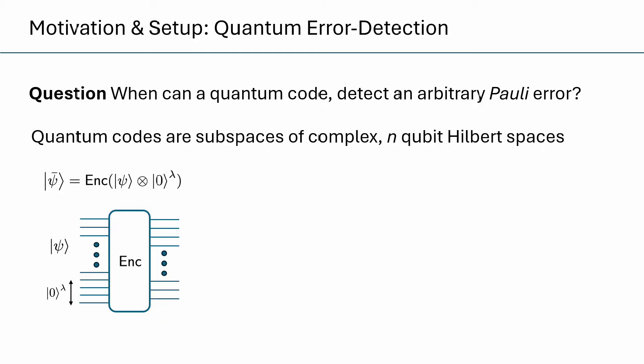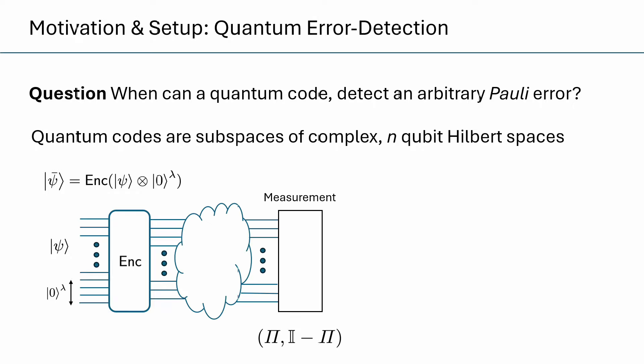What does it mean to be an error detection code in this context? Suppose we start with a message psi, and we encode it into our code by appending some security parameter and applying some reversible operation, like a unitary enc. Let psi bar be the resulting state. Now suppose we take our state and apply some unknown process to it. How do we check if it's being tampered with? We perform a measurement defined by a projection pi. This measurement has two outcomes: we either get pi and conclude nothing happened, or we get identity minus pi and conclude someone tampered with our state.